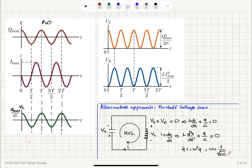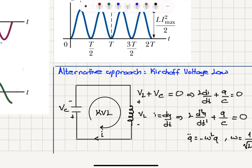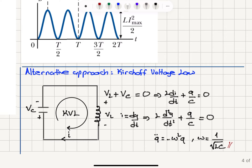We can obtain the same result using Kirchhoff's voltage law. For the capacitor and inductor connected in a loop with current flowing, VL plus Vc must equal zero. This gives L·di/dt plus Q over C equals zero. Since current equals dQ/dt, we obtain L·d²Q/dt² plus Q over C equals zero, or Q double-dot equals minus omega squared Q where omega equals 1 over square root LC — exactly the same result.